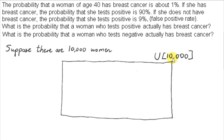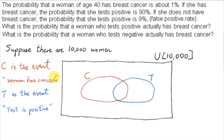Rather than using probability formulas, we are going to consider a frequency approach. We will suppose that there are 10,000 women and get the average numbers of women that have breast cancer or that test positive given various conditions. So imagine randomly selecting a woman from 10,000 women.